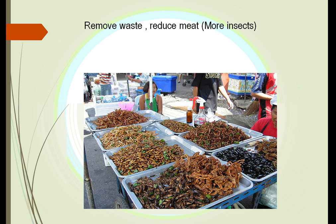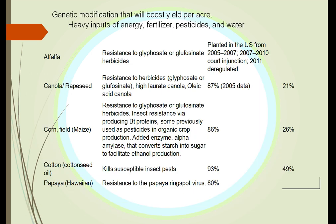We can do other things: reduce our waste, try different types of protein — for example, insects, which seem to have an inexhaustible supply. We can use more and more genetic modifications and don't have to rely as much on heavy inputs of energy such as fertilizers and pesticides.